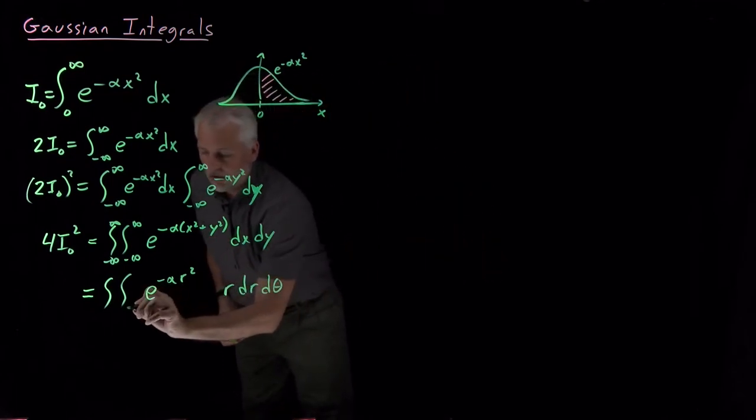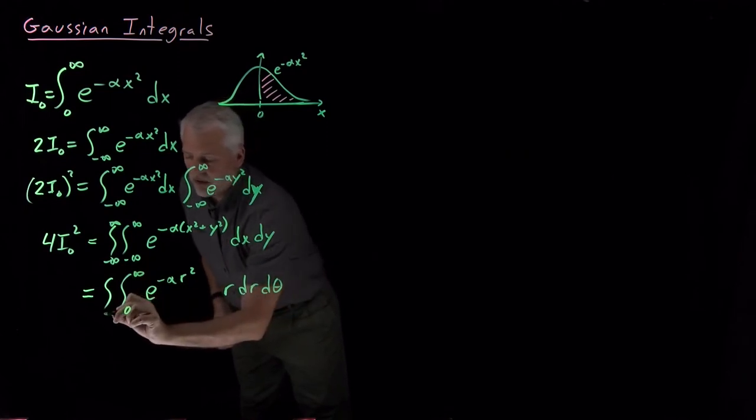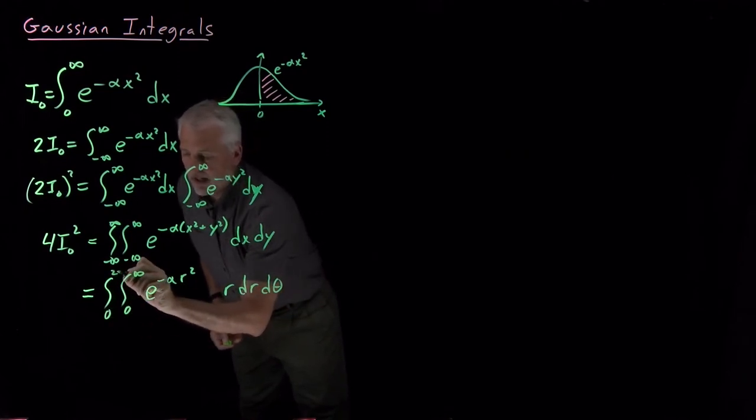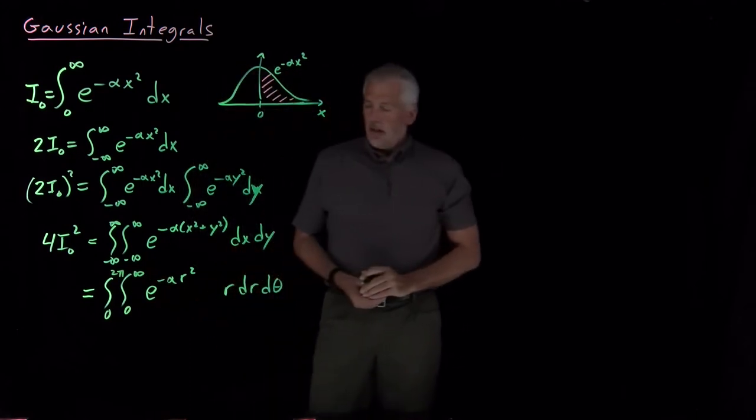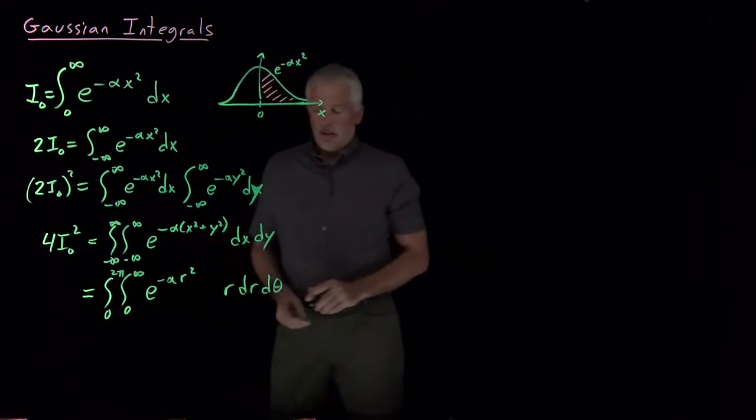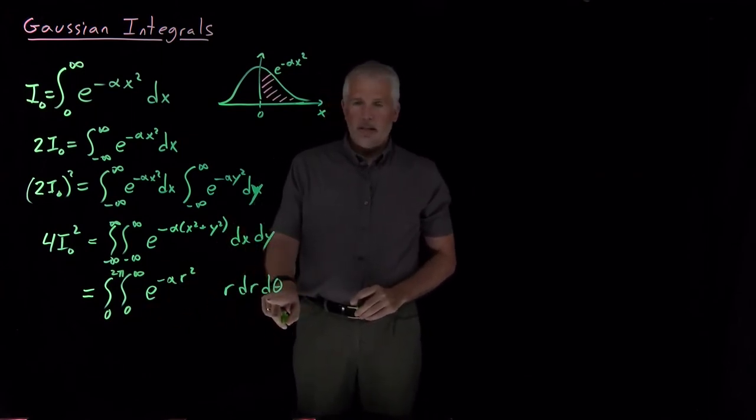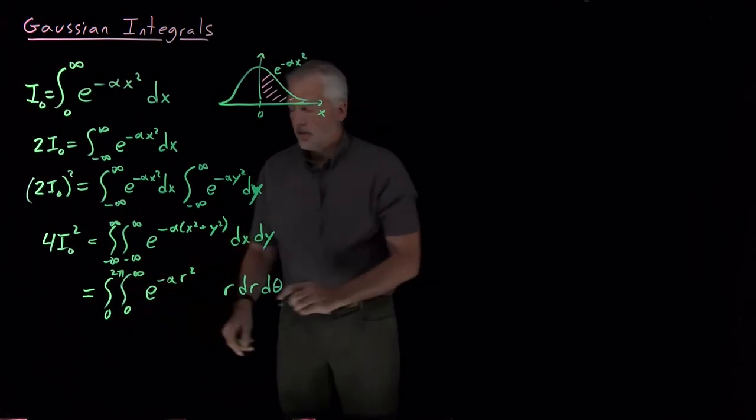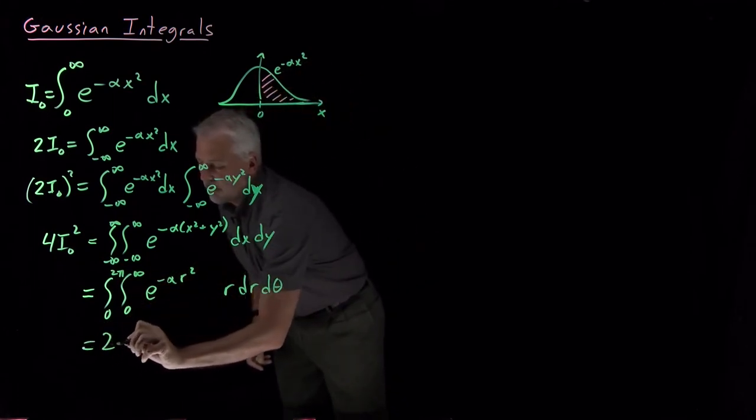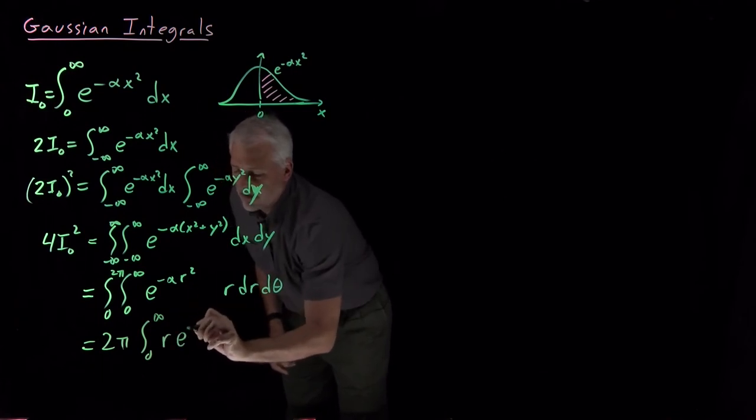Let me point out that the r integral, radius, goes from 0 to infinity and the angular variable goes from 0 to 2 pi. Let's go ahead and do the angular integration. So there's no theta anywhere except the d theta, integrating d theta from 0 to 2 pi gives me 2 pi.